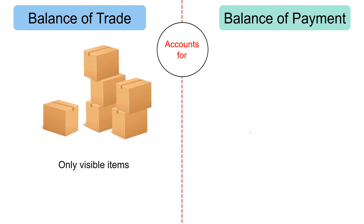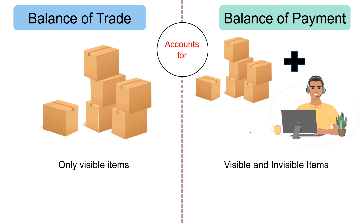Balance of trade accounts for only visible items, whereas balance of payment keeps track of both visible and invisible items. Balance of payment also keeps a track of unilateral and capital transfers. Visible items are those items which are visible, touchable, tangible or physical — they can be seen, measured and touched. As against, invisible items are those items which cannot be seen or touched, but can be felt — that is, services. Hence, balance of payment includes import and export of services like banking, consultancy services of IT, legal, etc.